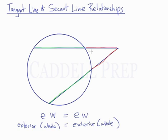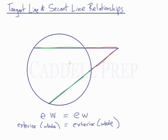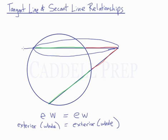The exterior parts are the segments that are outside of the circle. The whole represents the entire line — from the exterior point to where it ends inside the circle. So this would be one whole, and this would be the other whole.